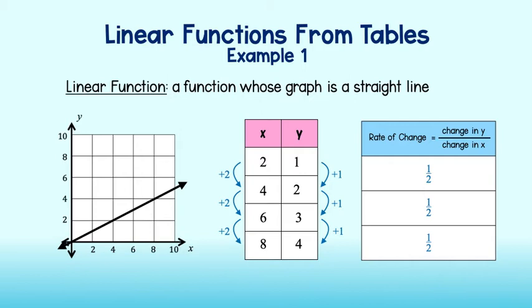Since the rate does not change from one pair of values to the next, this is called a constant rate of change. If a table displays a constant rate of change, then the table represents a linear function.